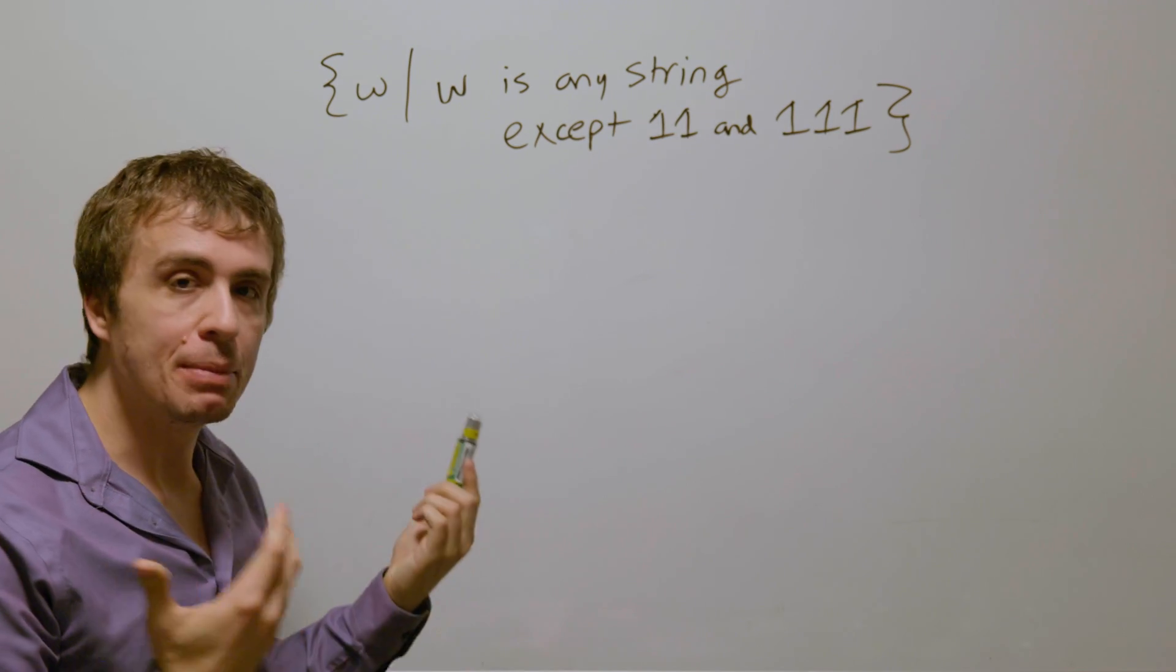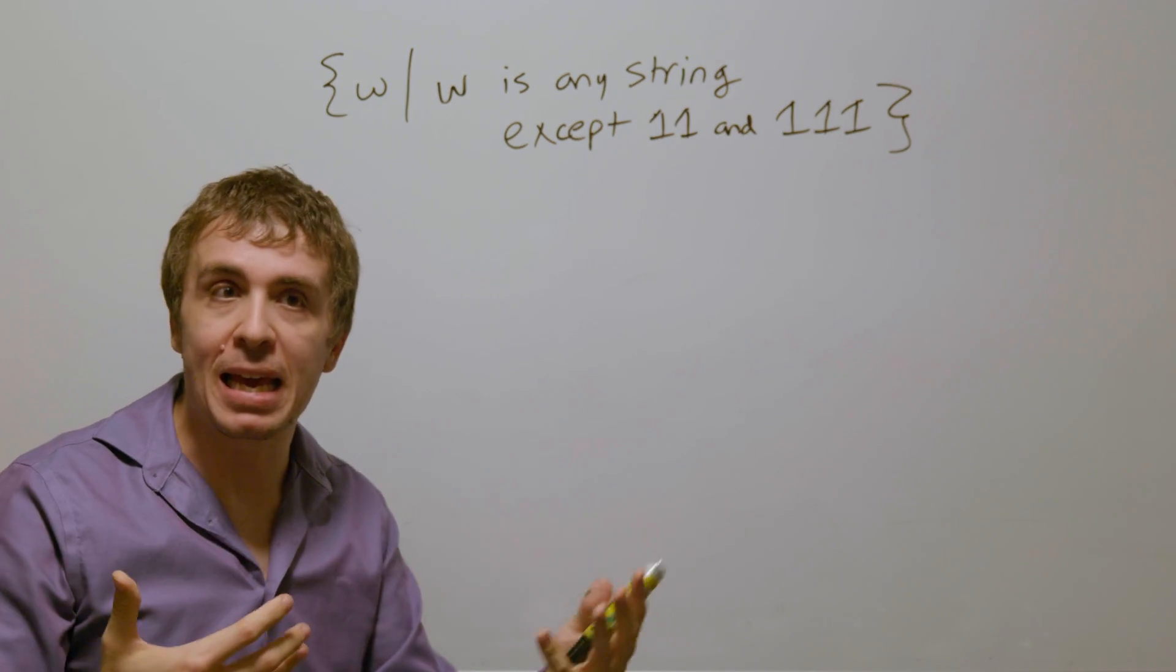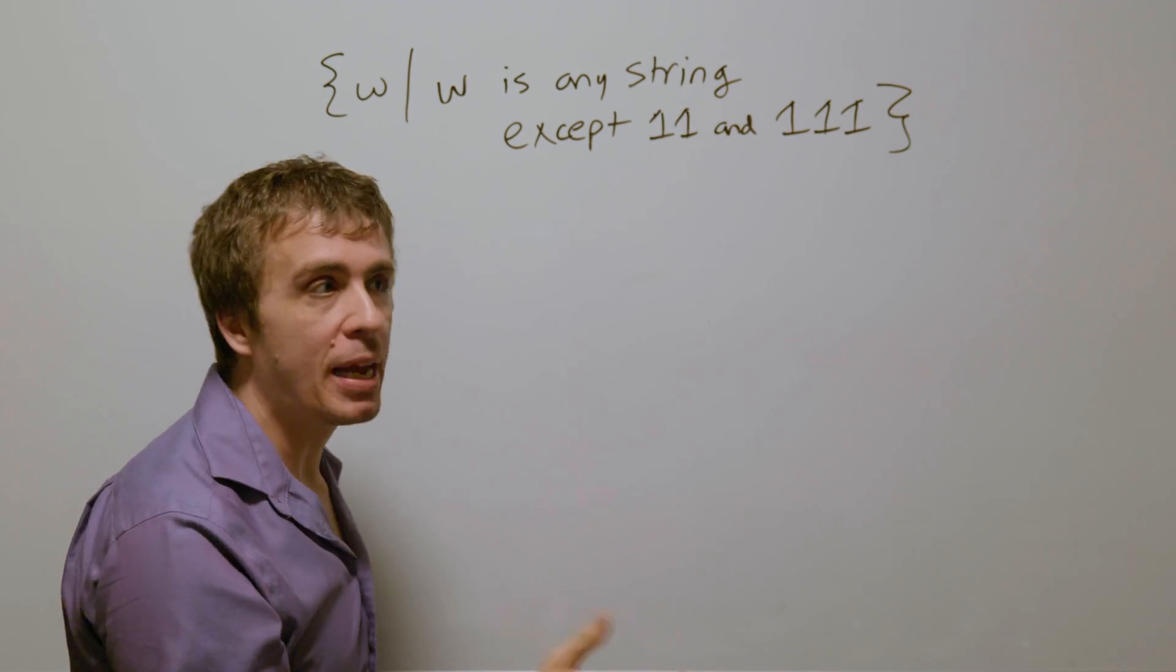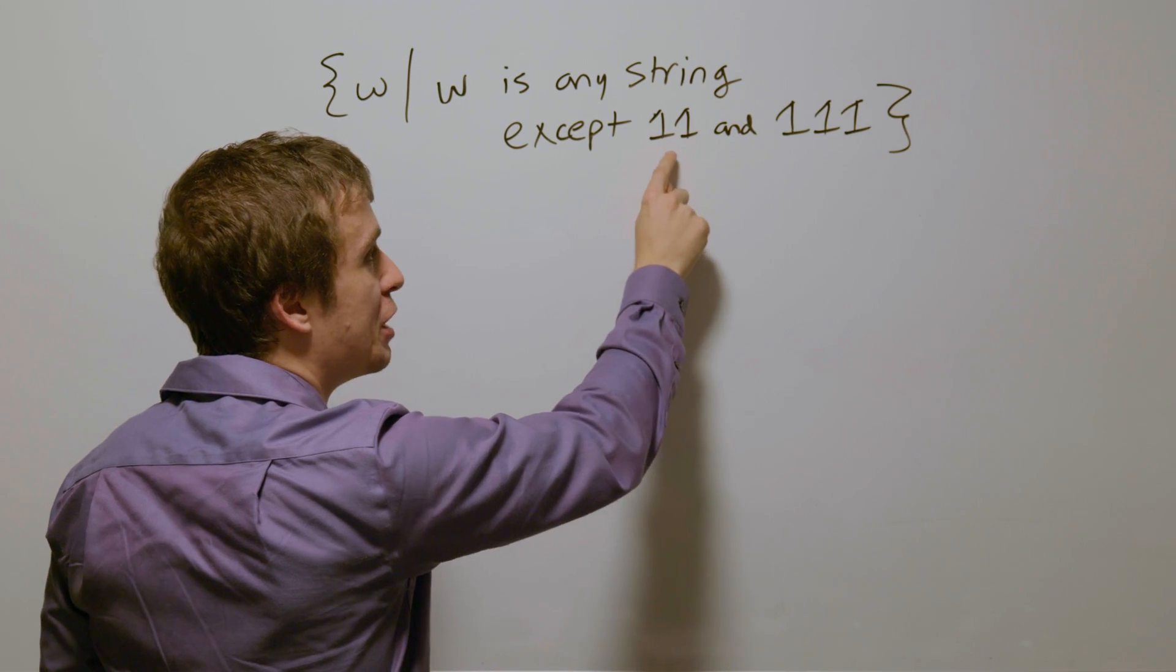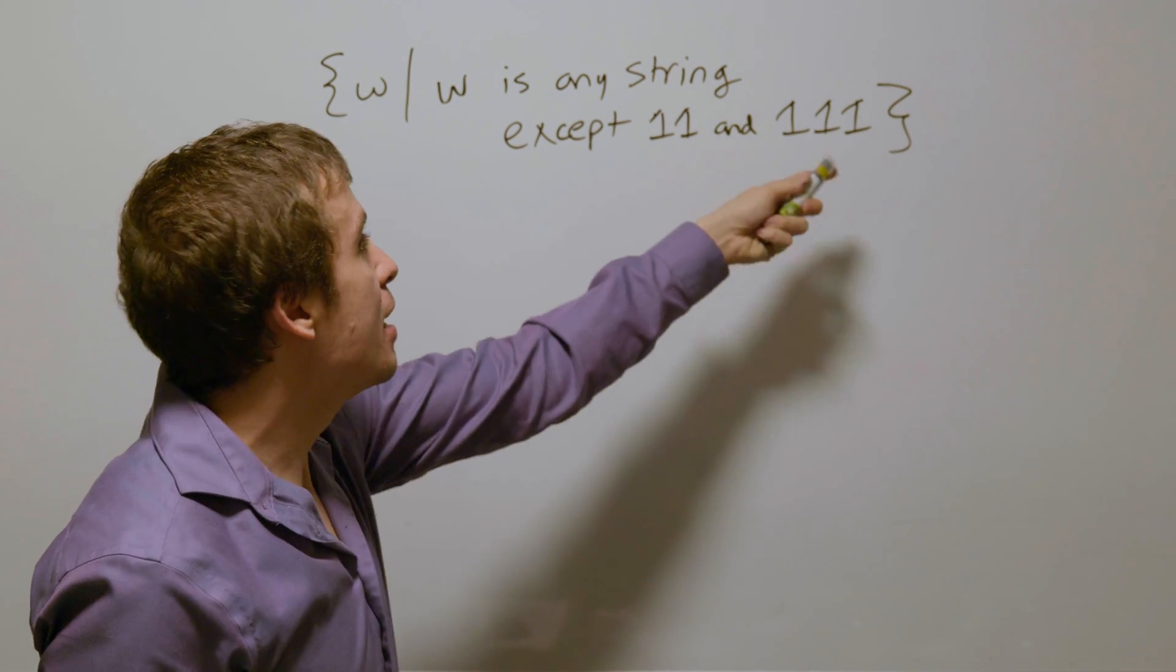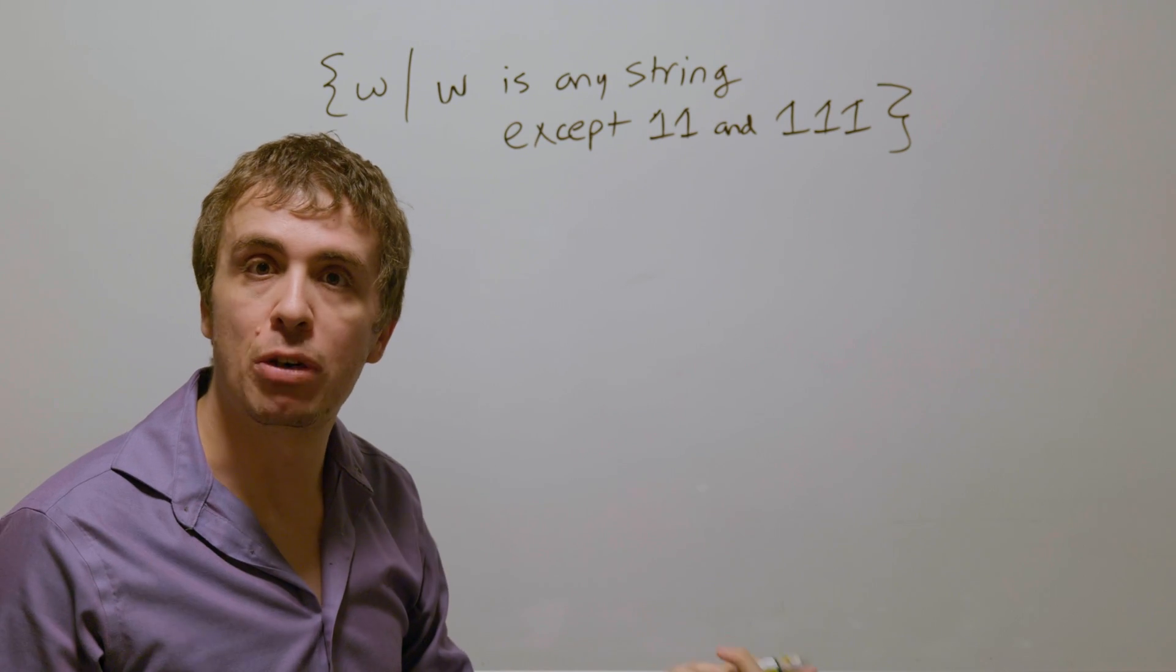This seems quite complicated because there are so many different cases of what we need to do. If we have a string of exactly two characters, we must make sure it's not 11, but it could be any of the other cases. And it's even more complicated if the string has length three.